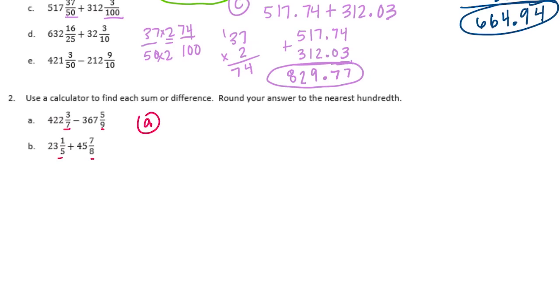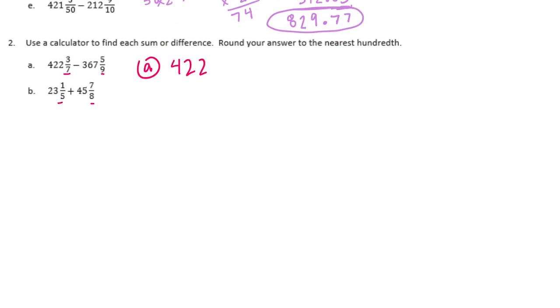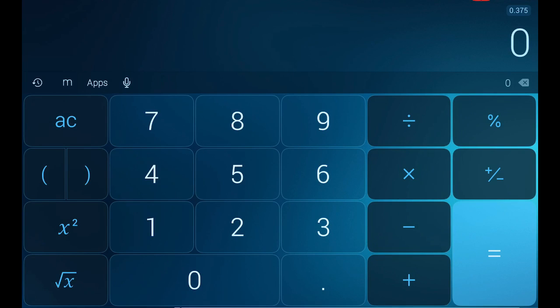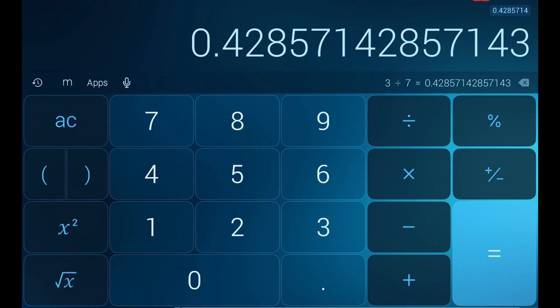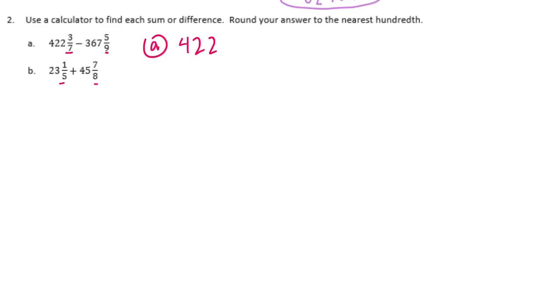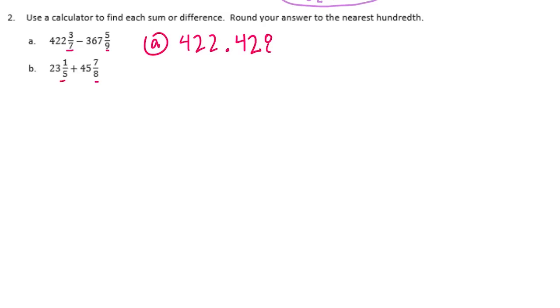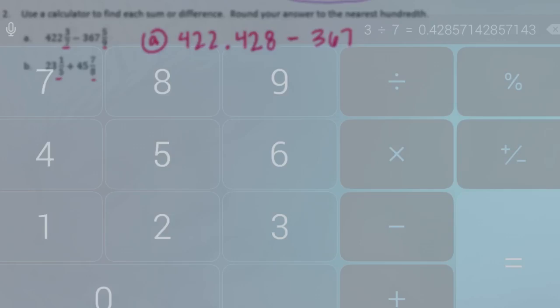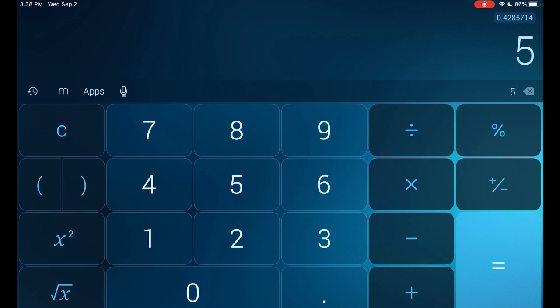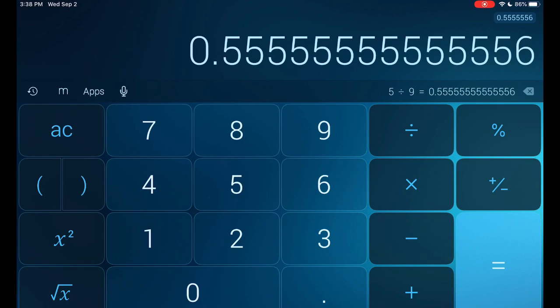Let's start with A. So we have 422 and 3 sevenths. So I'm going to go to my calculator. We have 3 sevenths, so I'm going to do 3 divided by 7. And we get a very, very long decimal, but I'm just going to take the first three digits behind the decimal point. So 428 thousandths, and 428 thousandths minus 367. Now let's do it for 5 ninths. Clear that out. 5 divided by 9 is equal to, so basically just 5 repeating. So we're going to do .555 or 555 thousandths.